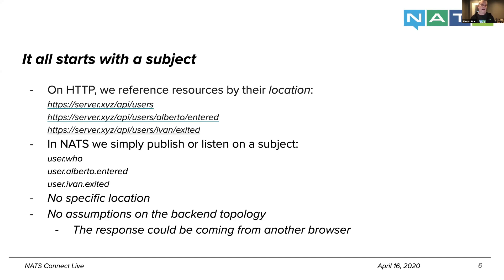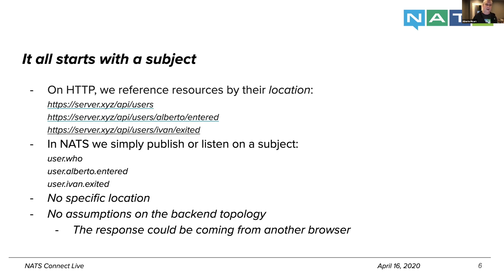In some types of applications we may need to store data on a server so that the browser can query it and extract what it wants to present. With NATS running in the browser we can actually request that information from all the services themselves. So instead of storing state or having something in between, individual services can simply answer for themselves what their state is. Without a specific URL or location bound to where the data is, we don't have to assume how the backend topology lays out.